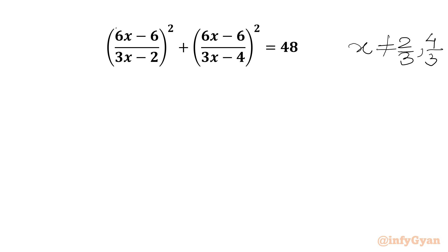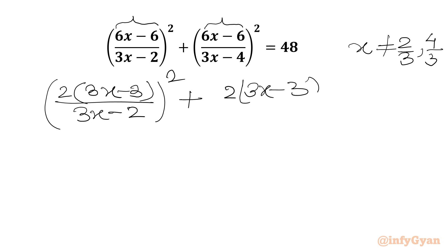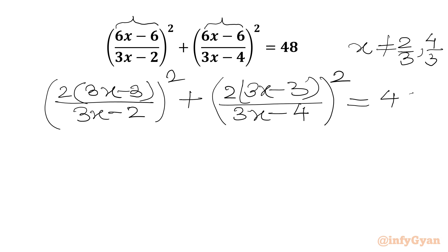Now we have 6x minus 6 in the numerator bracket. I will take 2 out as a common factor. So we can write 2 times (3x minus 3) over (3x minus 2), whole power 2, plus 2 is common in the bracket. We will write again (3x minus 3) over (3x minus 4), whole power 2, equal to 48.